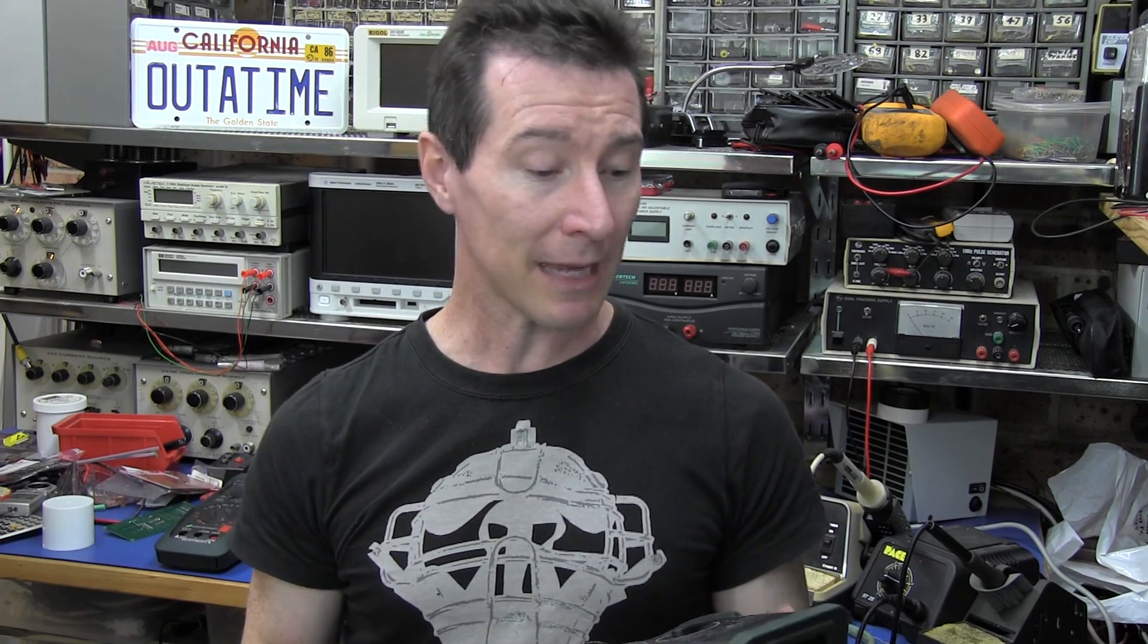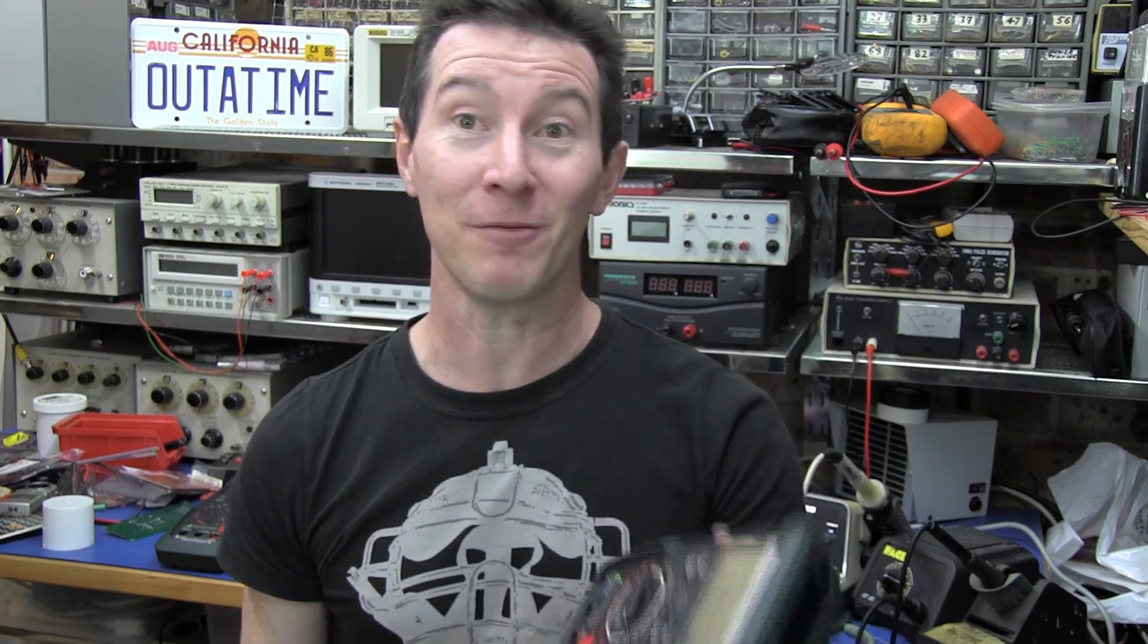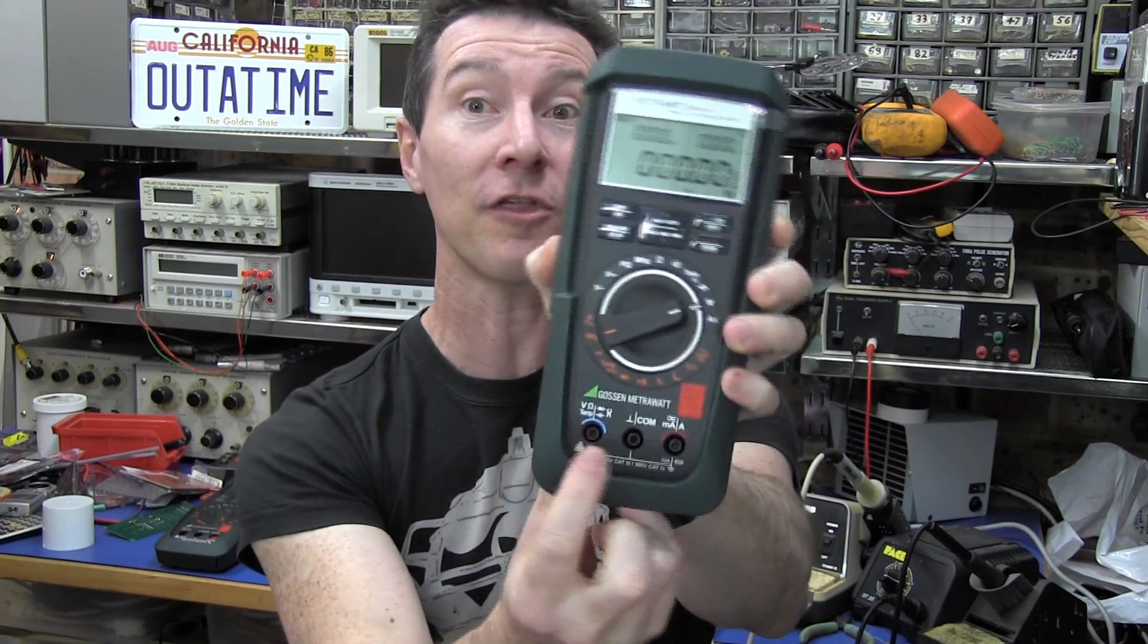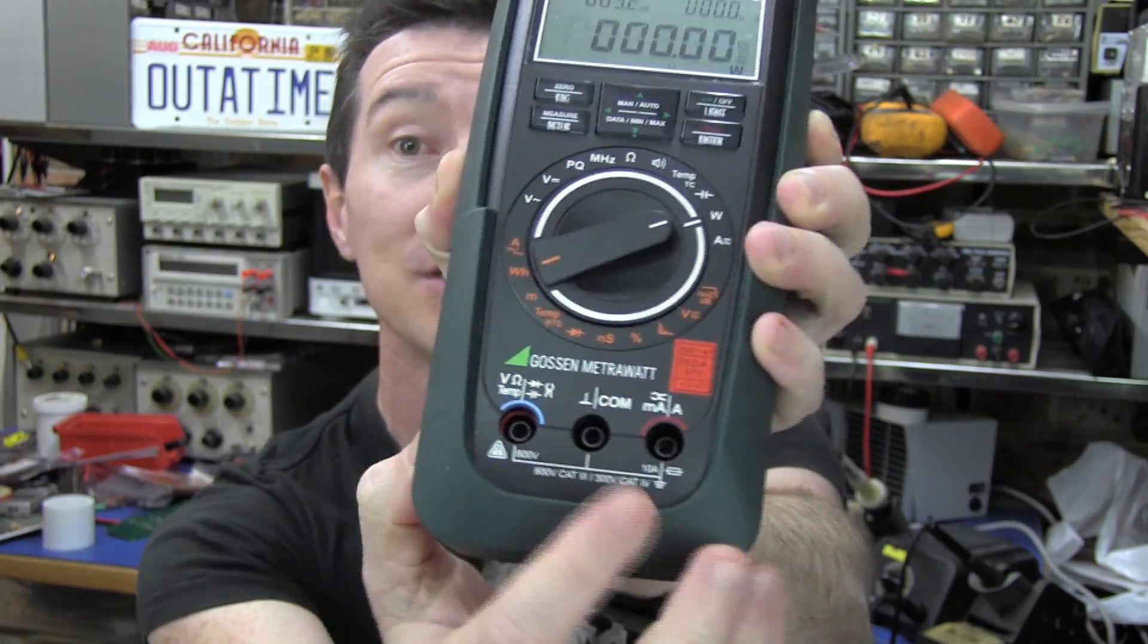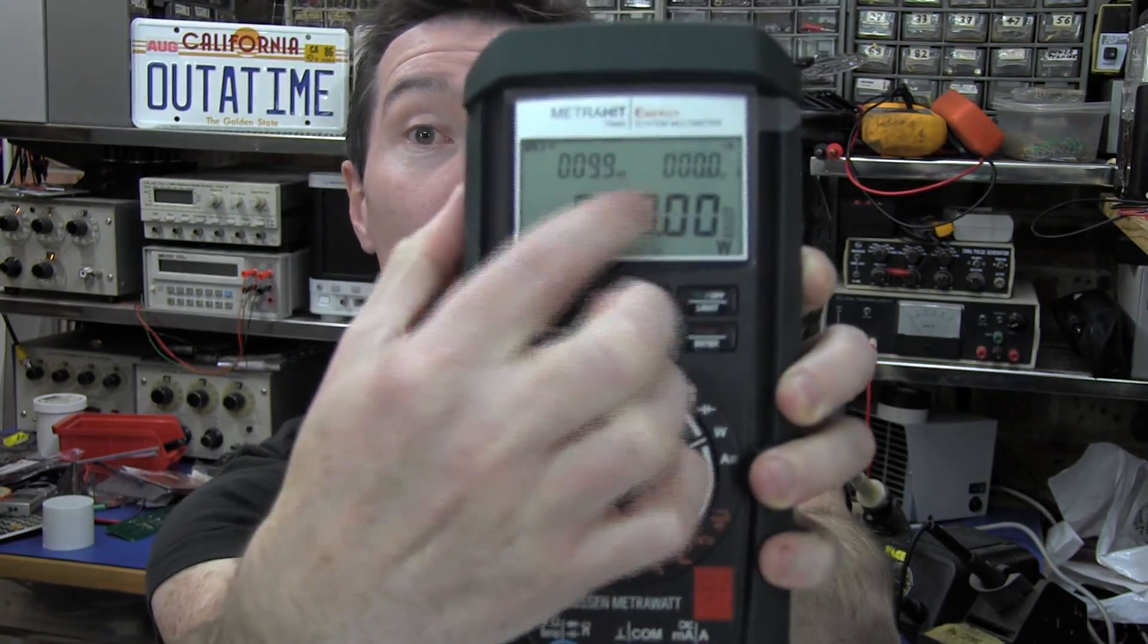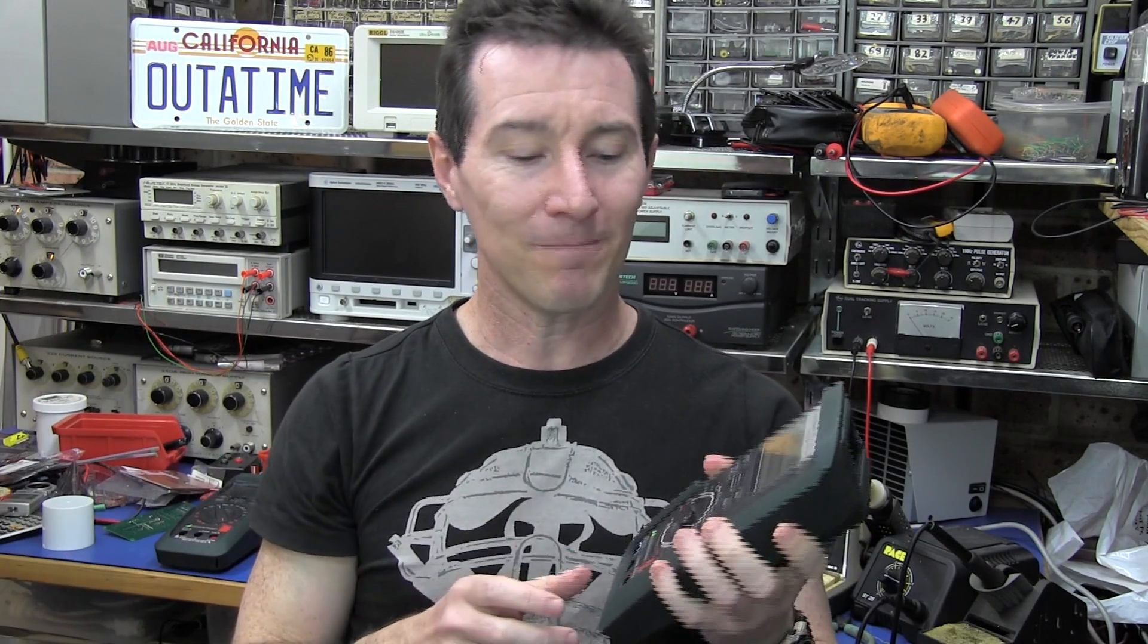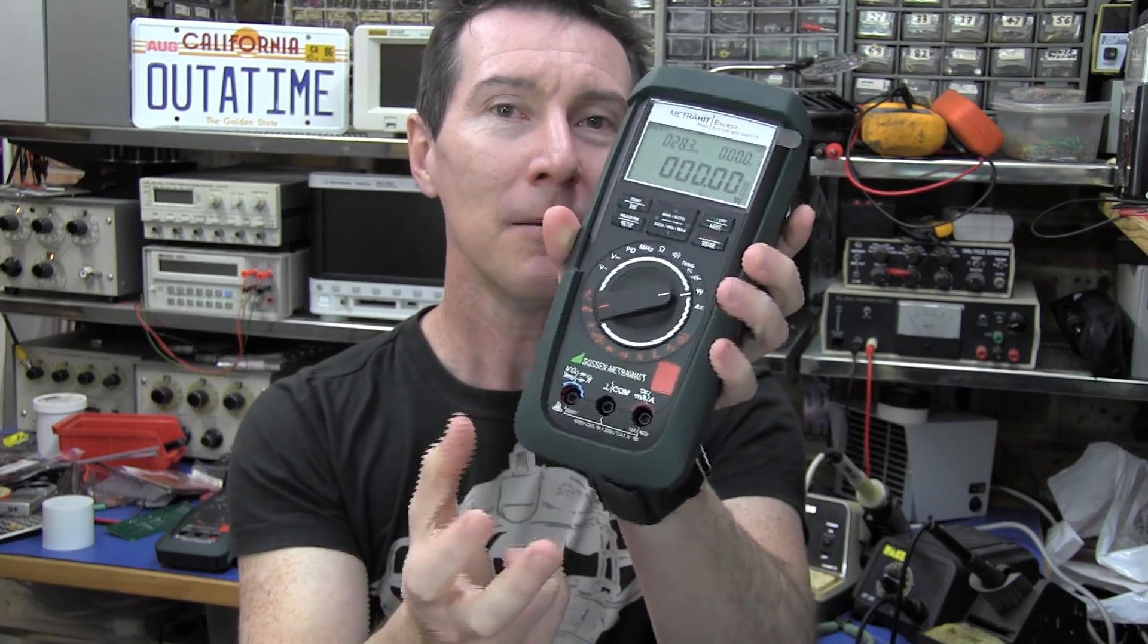And one of my favorite multimeters is the MetriHit Energy. And it measures volts and amps. It's still only got the three input jacks here. But it measures volts and amps at the same time. And it's got a triple display. And it displays power among other things. And it's got data logging and stuff like that. And there are another novel multimeter on the market is the Fluke 233, which has the removable display on it. So it got me starting to think, well, maybe if you could do more than just measure power like this.